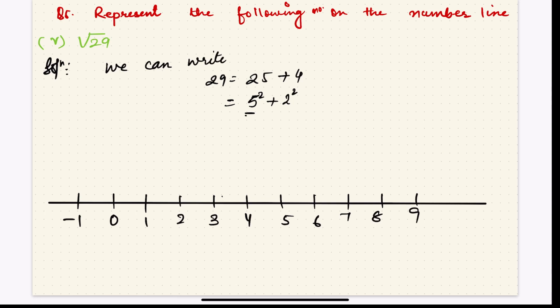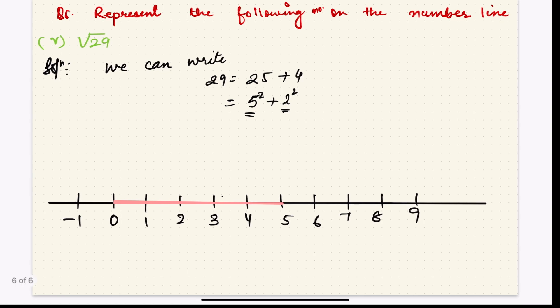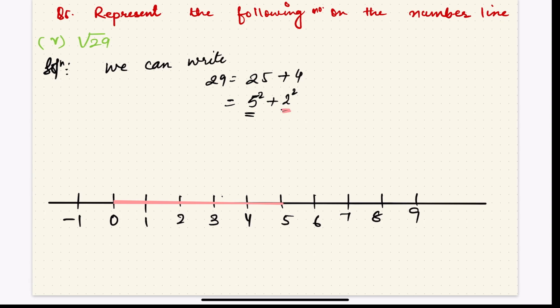Now, the first number is 5 here and the second number is 2 here. So first, you make 5. How to make 5? From 0 to 5, you draw a line. From 0 to 5, you draw a single line. After that, 5 is drawn. Now take 2. 2 you are going to draw perpendicular here. Don't forget, you are going to draw 2 perpendicular here.